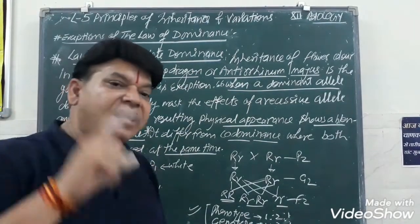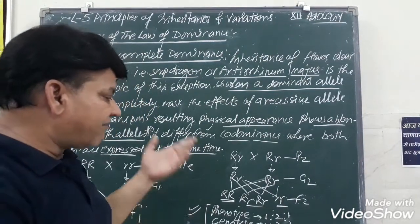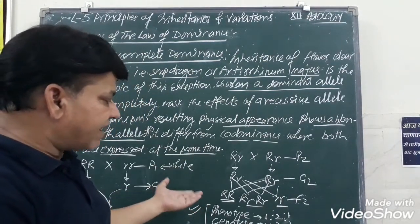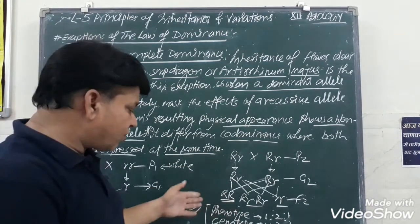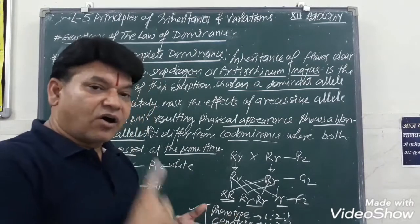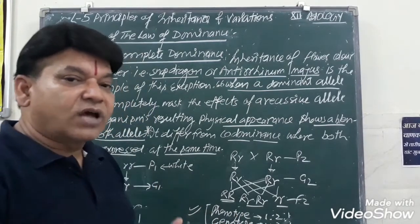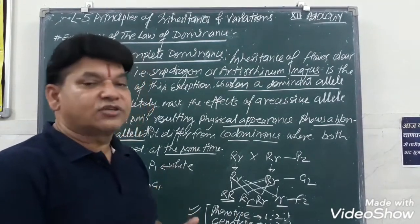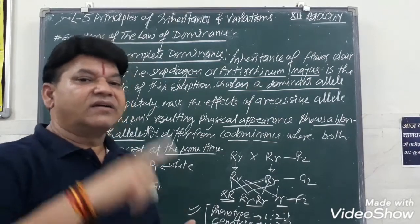And this is incomplete dominance. This is a very good example and very important question. The phenotype and genotype ratio are the same. In law of dominance, phenotype ratio will be 3 ratio 1. Three tall and one dwarf.